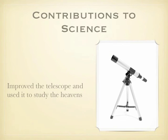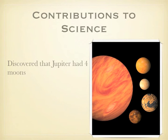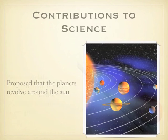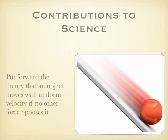He improved the telescope and used it to study the heavens. He was one of the first to study the heavens with a telescope and discovered that Jupiter had four moons. He proposed that the planets revolve around the sun, which conflicted with the beliefs of the church, and he was sentenced to house arrest for the rest of his life. Galileo also put forward the theory that an object moves with uniform velocity if no other force opposes it — a theory that was further developed by Newton.